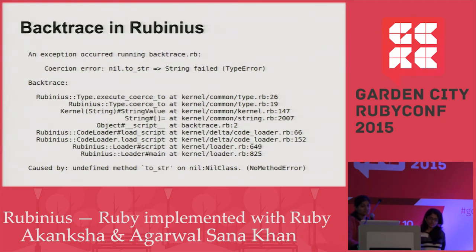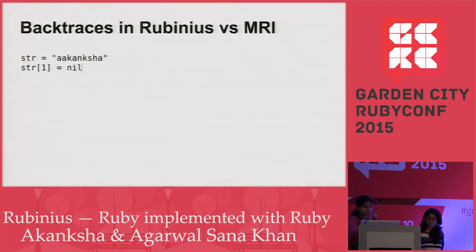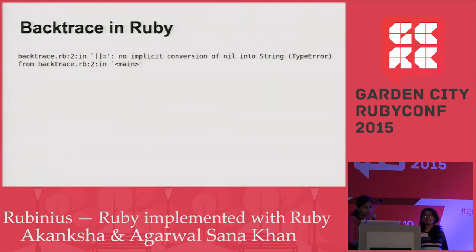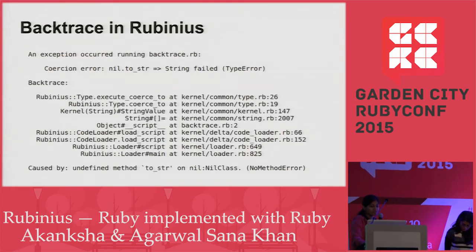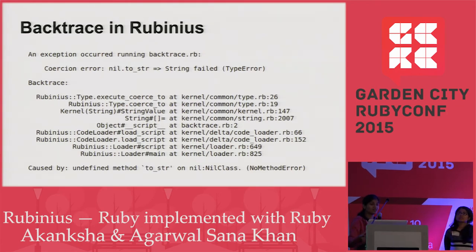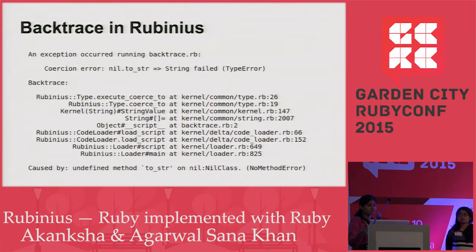This is the backtrace in Rubinius, which tells you exactly when you called that method — it gives you insights into all the methods on the stack at the time the error occurred. Here, at the first line of code my error was thrown. MRI just says there is an error at line number two, but Rubinius gives you all the details about the functions being called when you get that error inside the kernel, so you can put your breakpoint there and debug your code.